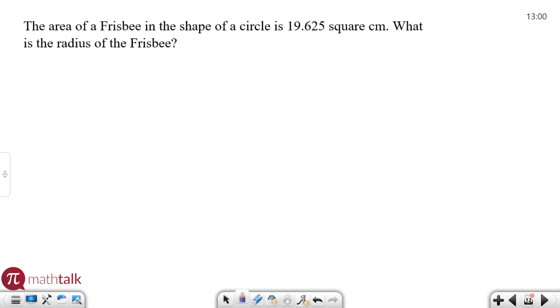I have another smaller word problem. It says the area of a frisbee in the shape of a circle, which is really key, is 19.625 square centimeters. What is the radius? So this is a problem involving the area of a circle, which is one of your formulas on the formula sheet. Area of a circle is pi r squared.